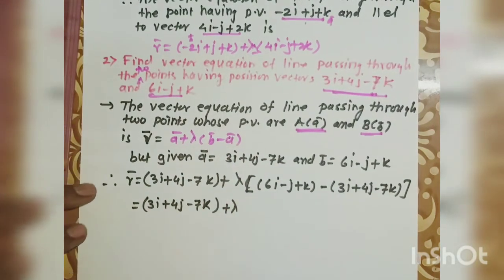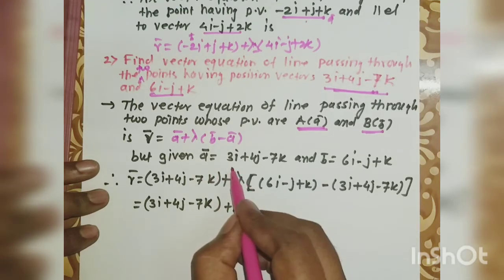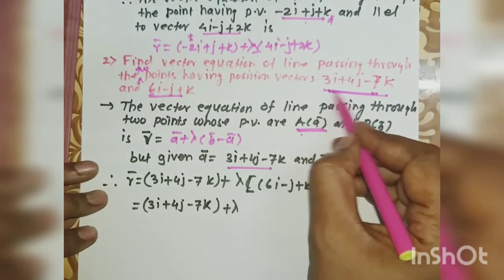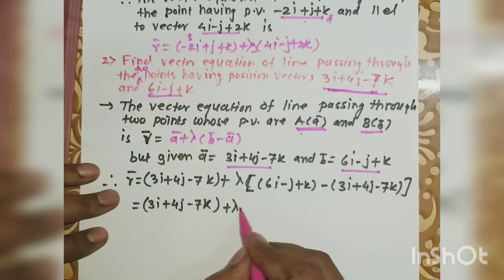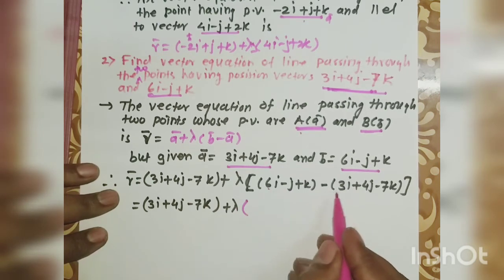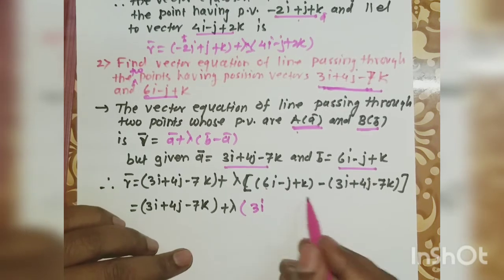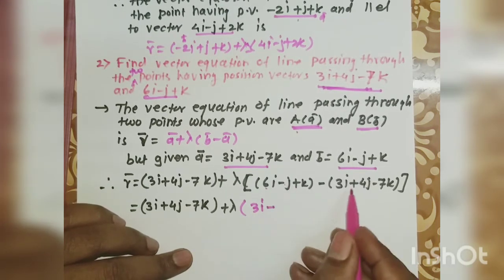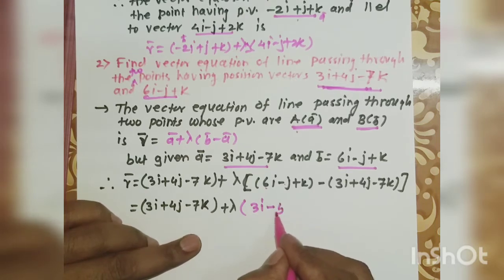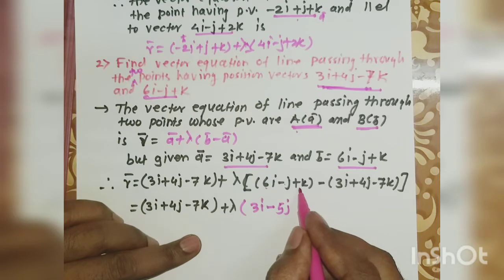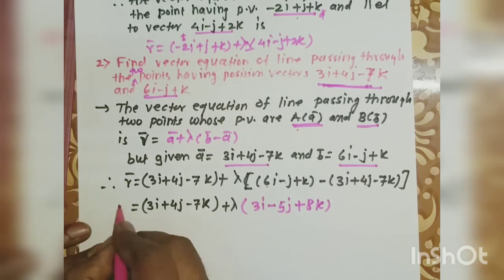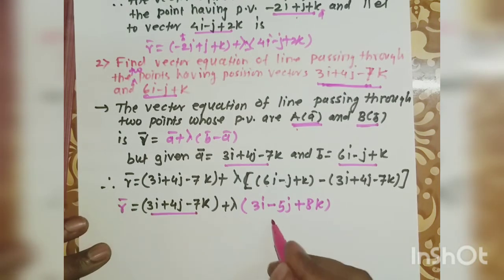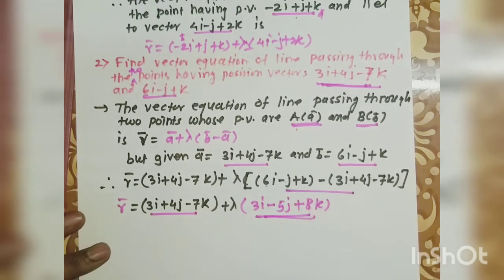Here, this formula is given. We substitute the values of Ā and B̄ into the formula. The calculation gives us components: 6i, then 3i minus i, minus j minus 4j minus 5j, and 1 minus minus plus 7, that means 7 plus 1 is 8k. So r̄ = Ā + λ(B̄ − Ā), substituting the given values accordingly.